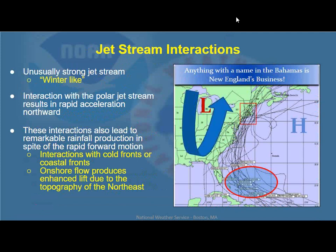With onshore flow — east or southeast winds — when that bumps up against the terrain, whether it's the hills in Worcester County, northwest Rhode Island, northern Connecticut, or the Berkshires and Litchfield Hills, that helps wring out the moisture and adds to the lift that occurs. You've got a big dip in the jet stream across the eastern states that helps draw the system northward, and the stronger jet stream winds to the north actually help the system undergo extratropical transition. We always like to say anything with a name in the Bahamas is New England's business — and that's certainly true.